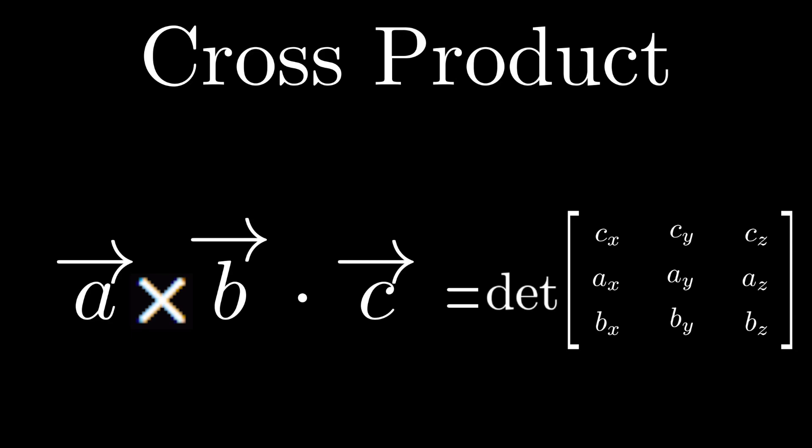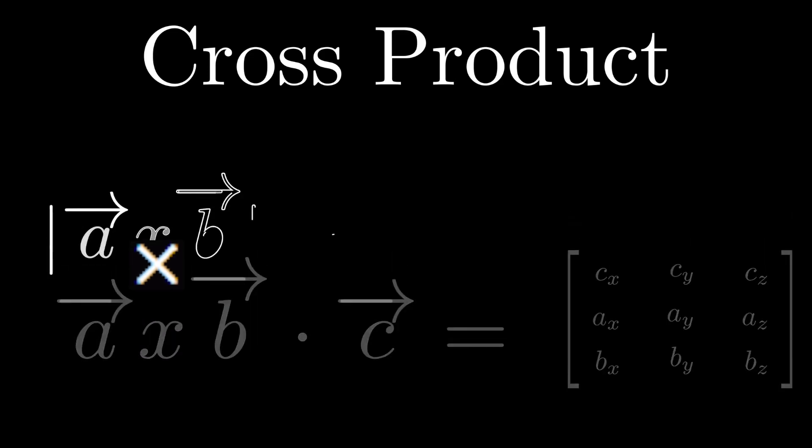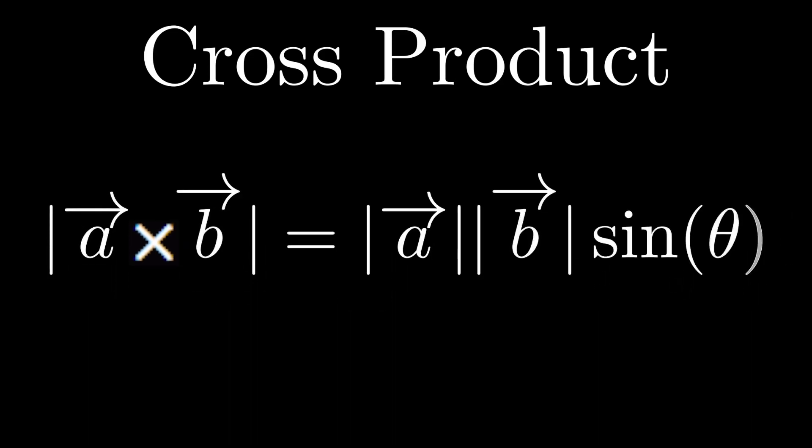Also, the magnitude of A arrow cross B arrow equals the magnitude of the A arrow times the magnitude of the B arrow times sine of theta, where theta is the angle between A arrow and B arrow.